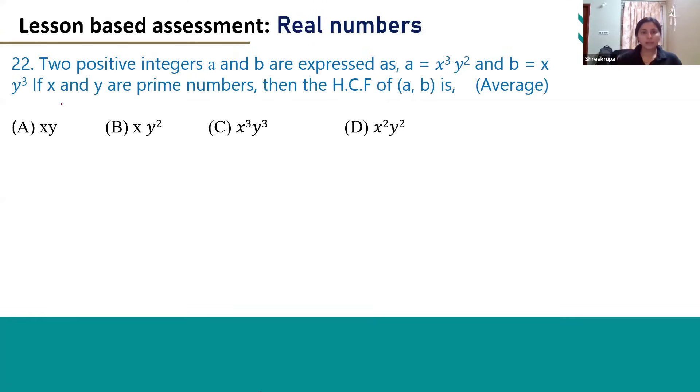Two positive integers a and b are expressed as a = x³y² and b = xy³. If x and y are prime numbers, then the HCF of (a,b) is.